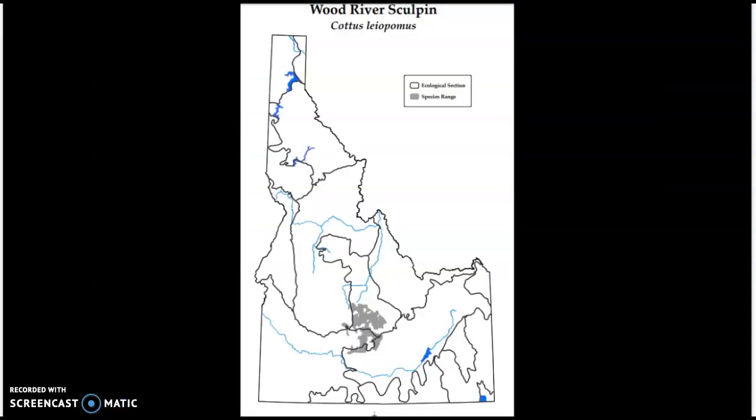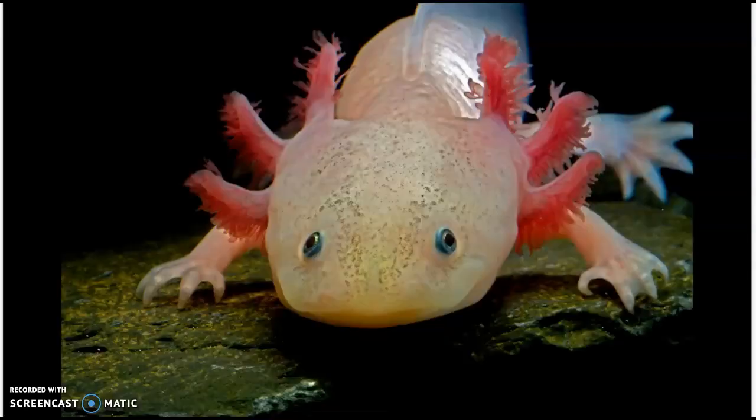This map shows in Idaho — that gray area in the middle — that's where the Wood River Sculpins are found, and again, nowhere else in the world. Very unique adaptations. We could think about other species and their adaptations to other types of environments.